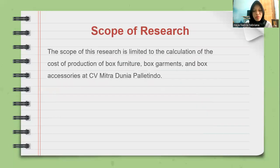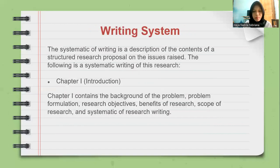The scope of this research is limited to the calculation of the cost of production of box furniture, box garments, and box accessories at CV Mitra Dunia Palitindo. For the writing system, the systematic of writing is a description of the contents of a structured research proposal on the issues raised, as follows.